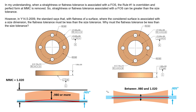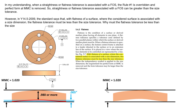So this is not always an applicable method to define flatness for a feature of size, though it does negate Rule #1. The standard says that with flatness of a surface, where the considered surface is associated with a size dimension, the flatness tolerance must be less than the size tolerance. That's absolutely true. In our example, our flatness of five thousandths is less than the size tolerance of forty thousandths. That forty thousandths is derived from the MMC envelope of 1.020 and the smallest local size allowed of 0.980.